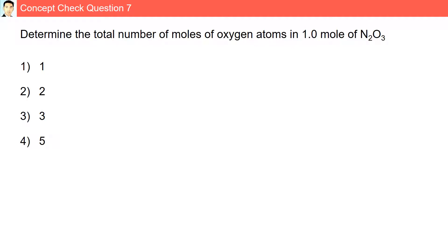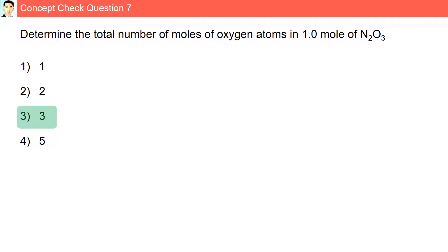Question 7. Determine the total number of moles of oxygen atoms in 1 mole of N2O3. There are 3 atoms of oxygen present in N2O3. Therefore, 1 mole of N2O3 will contain 3 moles of oxygen atoms.